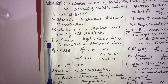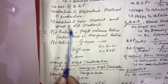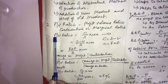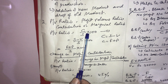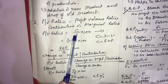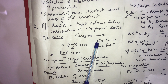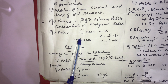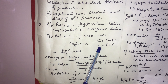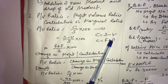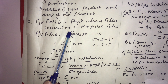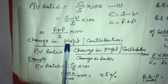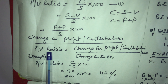The second important term required to calculate in practical questions is PV ratio. Another name for PV ratio is contribution ratio or marginal ratio. The formula is: PV ratio equals C upon S multiplied by 100, where C is contribution and S is sales. From the marginal cost equation, C equals S minus V, or also C equals F plus P, giving us F plus P upon S multiplied by 100. If change in profit or contribution is given, then PV ratio equals change in profit or contribution divided by change in sales multiplied by 100.